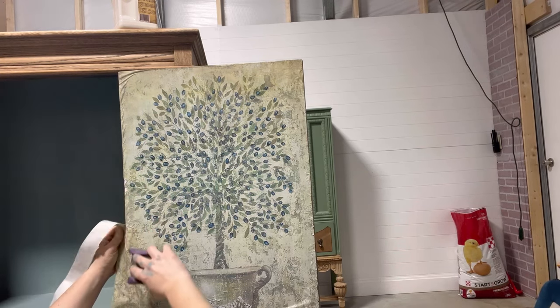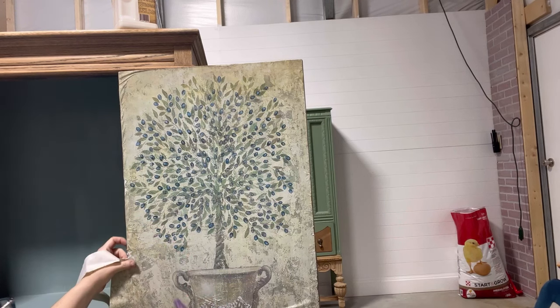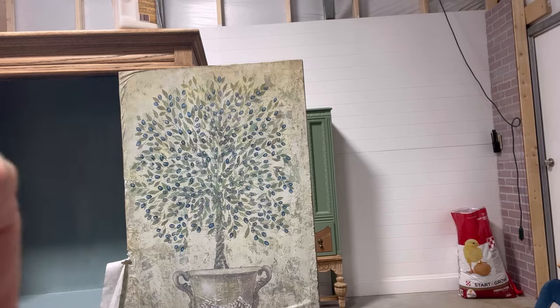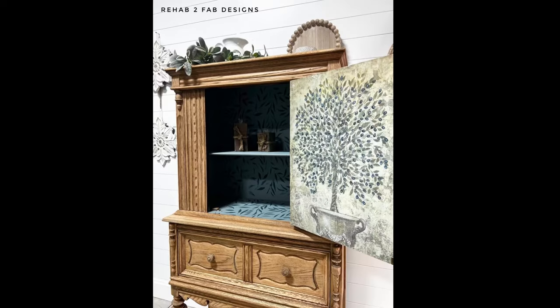Once my paper was in place, I came back with another coat of Clear Coat over top of it to make sure it was adhered properly, and that was it for this piece. Here's a look at it finished up. Here's the inside painted in Vintage Duck Egg and stenciled with Leaf Me Alone and Antebellum, and the Tuscan Olive paper on the back. I love the way it turned out, super excited about it. Hope you guys like it too.